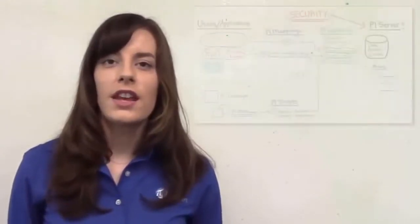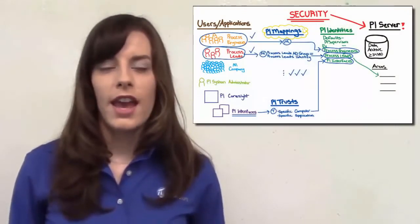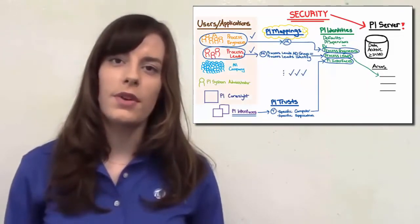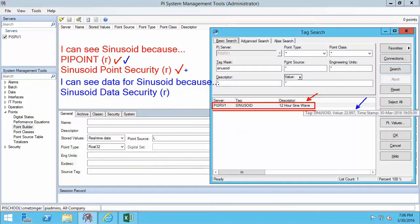This online course consists of video lectures showing you how to set up identities, mappings, and trusts. And to do so in a way that we can really tailor the permissions for our users and applications, so they get just the amount of access they need.